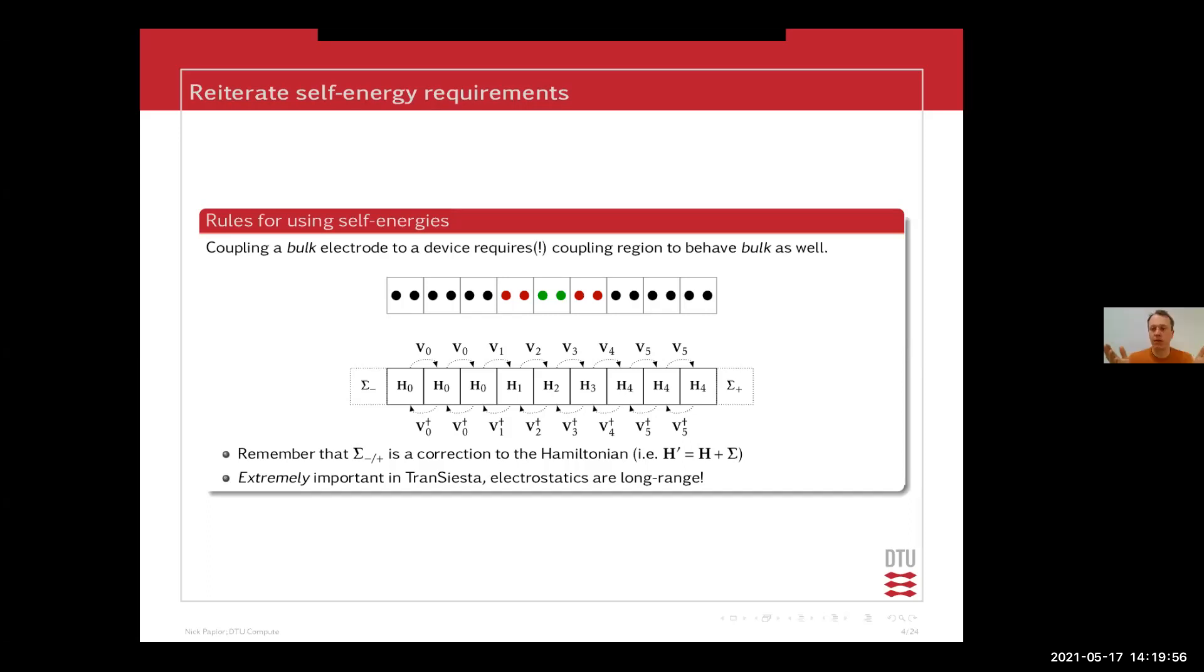You should just be sure that your electrodes behave as your bulk electrodes, as your bulk properties of that given electrode. So always have this in the back of your head when you initiate a calculation. Is my screening sufficiently good enough to have a short distance between my electrode and the scattering region? Or do I really need to have more electrode layers to screen off the device region? The electrostatics are long range. So have this at the back of your head always.